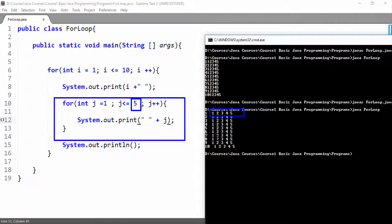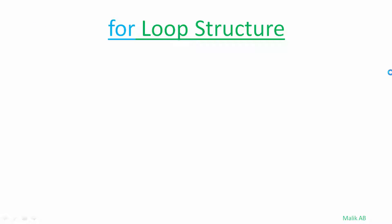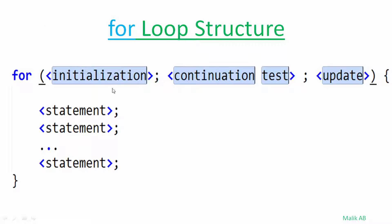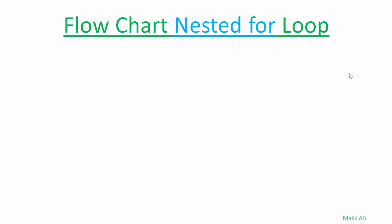Let's understand the flowchart of this nested for loop. This is the structure of the for loop: initialize once, continuation test each time. After the continuation test, execute the block of code and then perform the update. Then take the continuation test again. If the value of the variable passes the continuation test, continue the code, then update, and it will continue until our test is false.